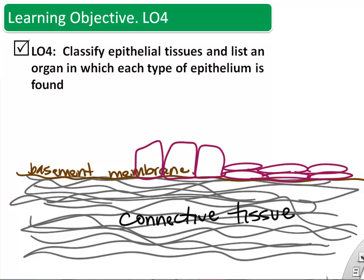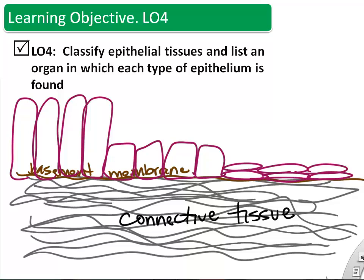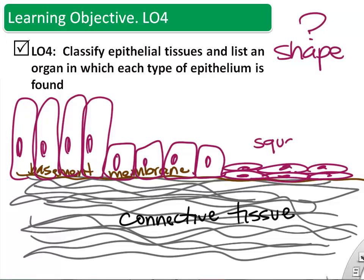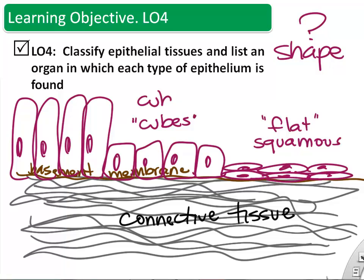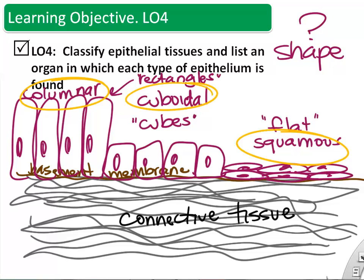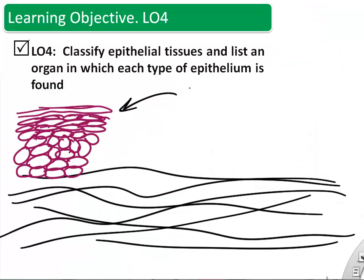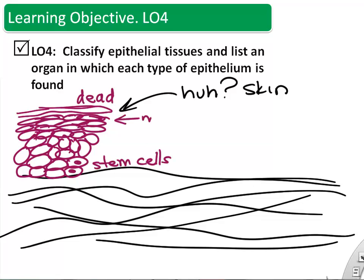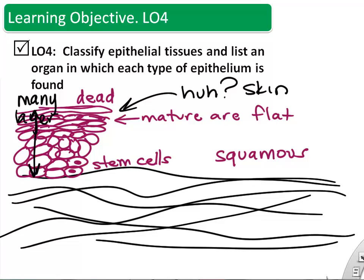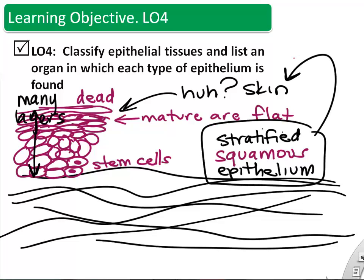We can also find different shapes of epithelial cells: flat ones, square ones, and rectangular ones. Shape ranges from squamous (flat, like the ones in the heart) to cuboidal (mostly seen in the kidney and bladder) to columnar (seen in the respiratory and digestive tracts). For the skin, the dead and mature cells look flat, and the stem cells are more cuboidal, but because the mature ones are flat we call it squamous. Because it's stacked in many layers, we call it stratified squamous epithelium.